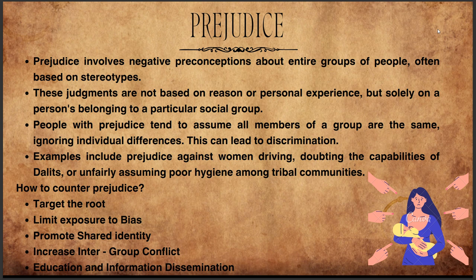How can we counter prejudice? Targeting the root — identify the source of prejudice and tackle it from its root. Limit exposure to bias — reduce opportunities to encounter biased information or environments that promote injustice. Promote shared identity — encourage individuals to consider a broader social identity like national or global citizenship, instead of focusing only on narrow groups, which benefits both the individual and society.